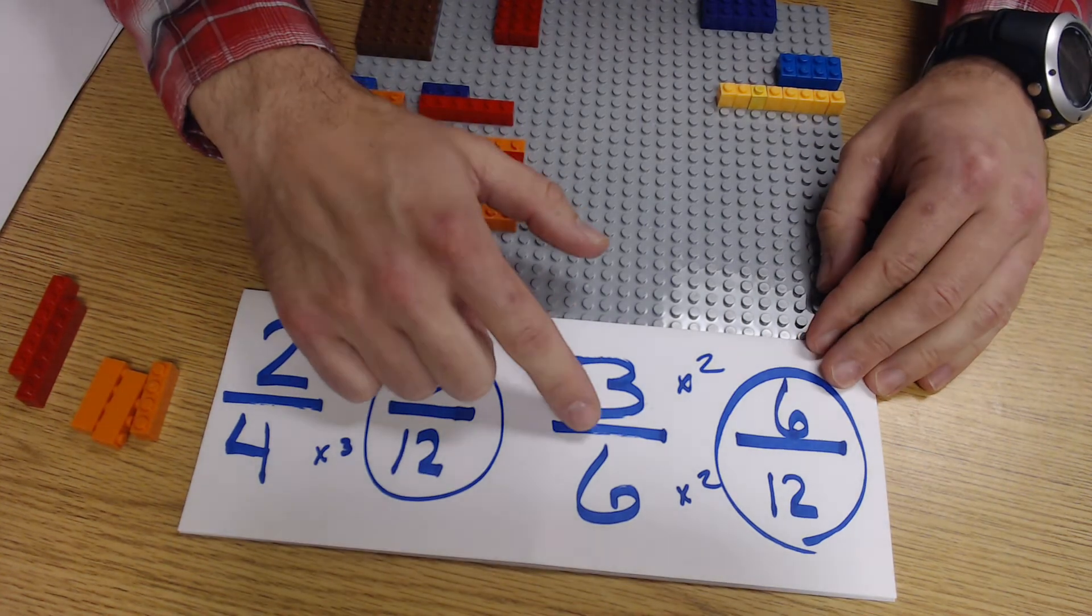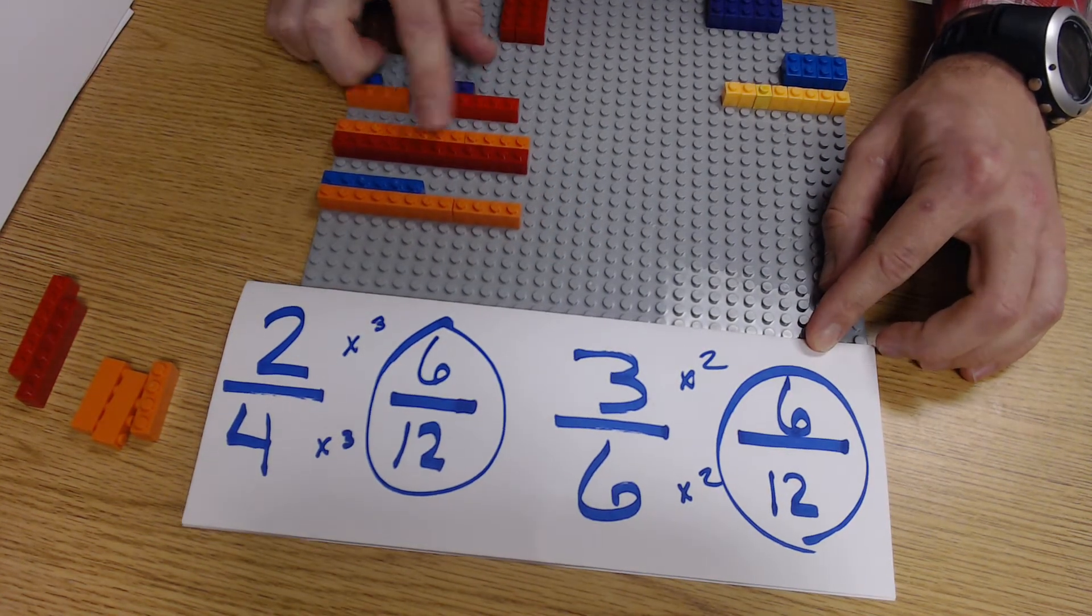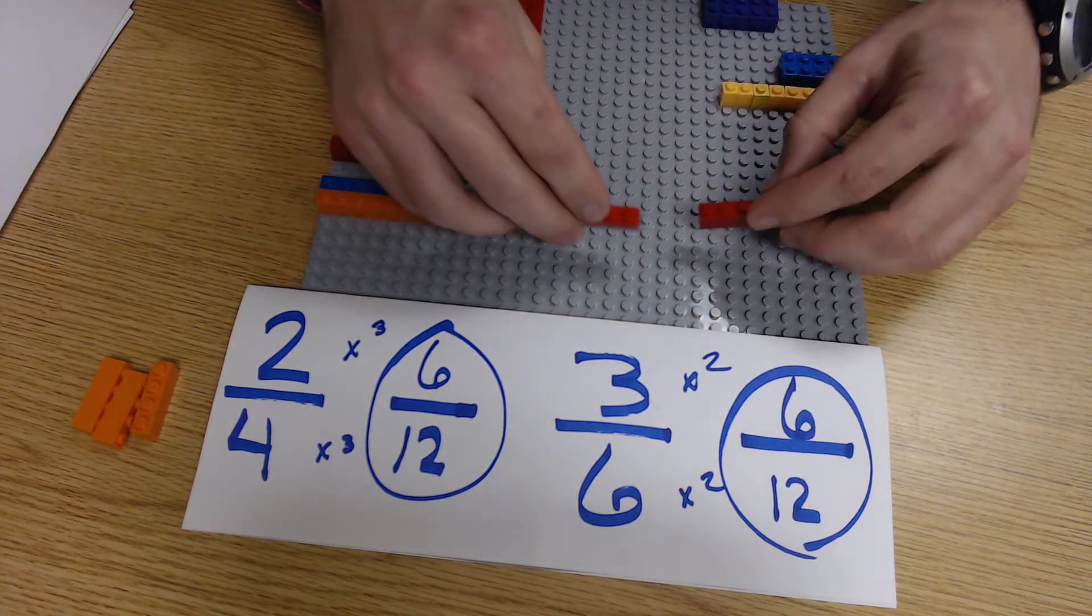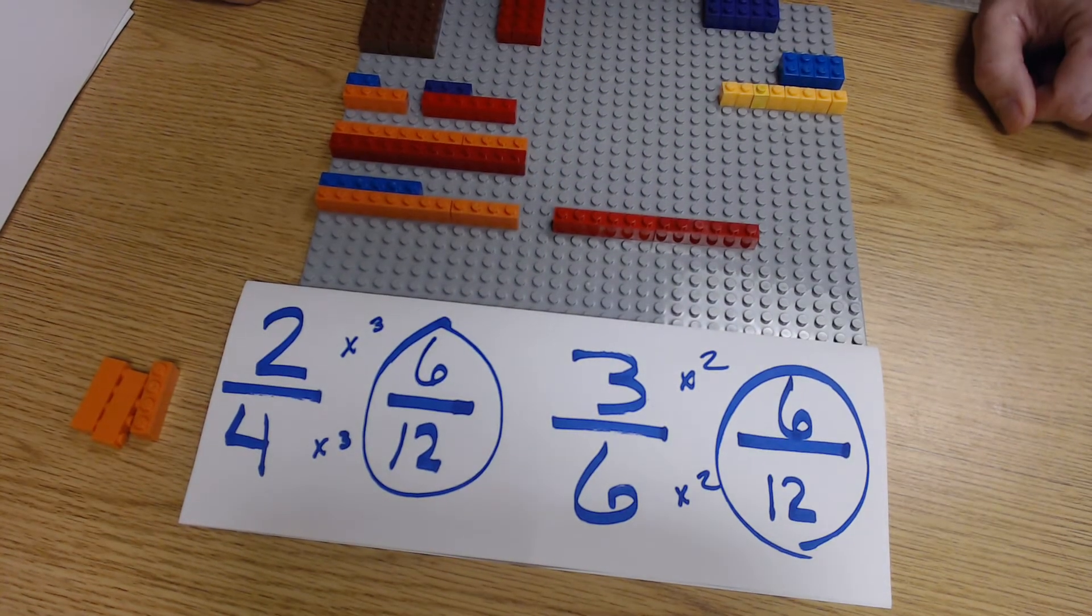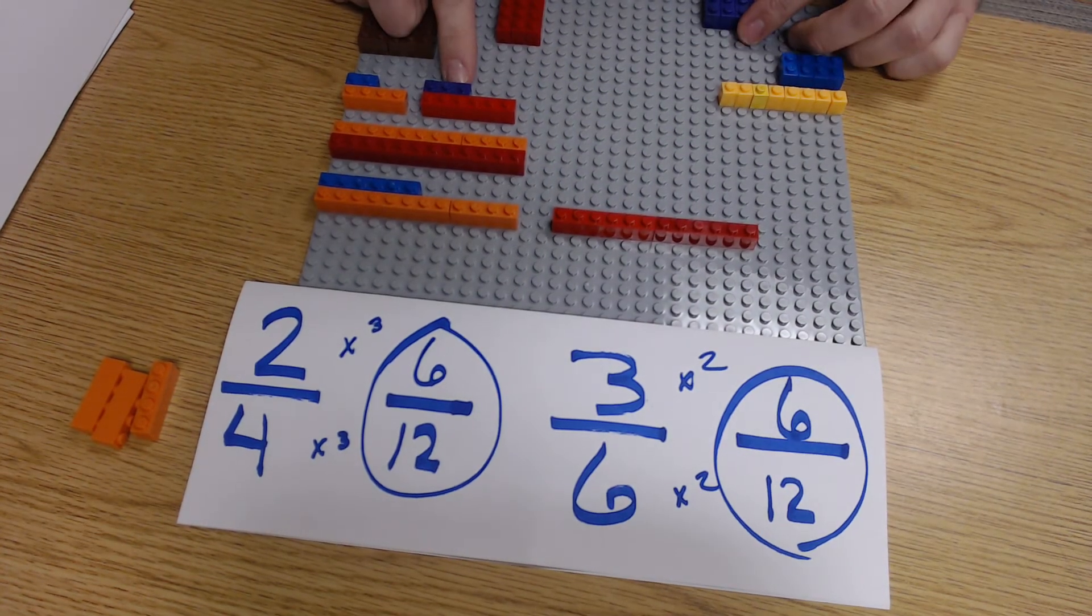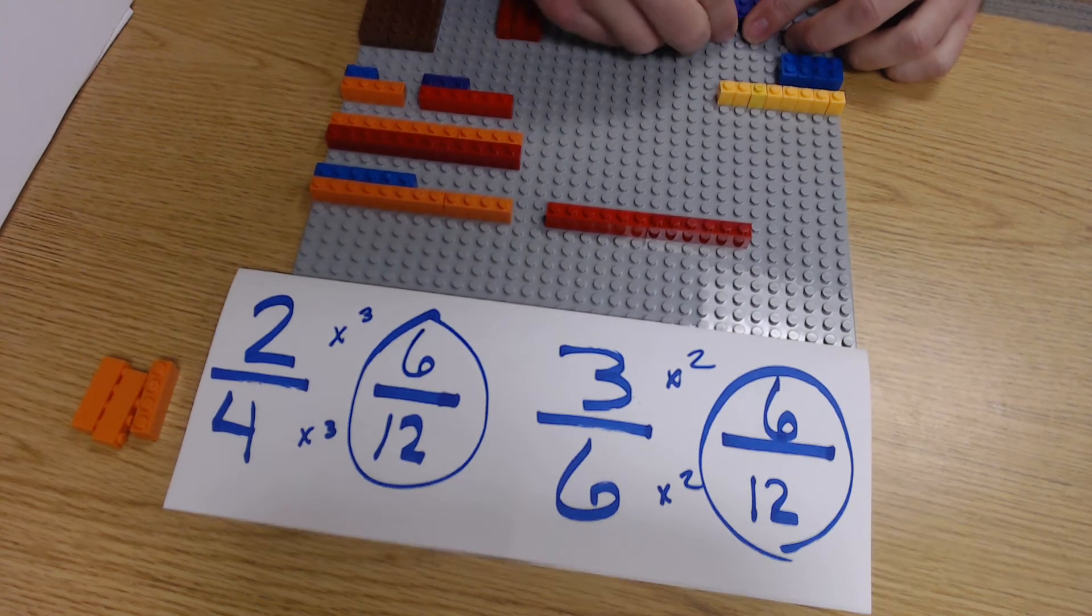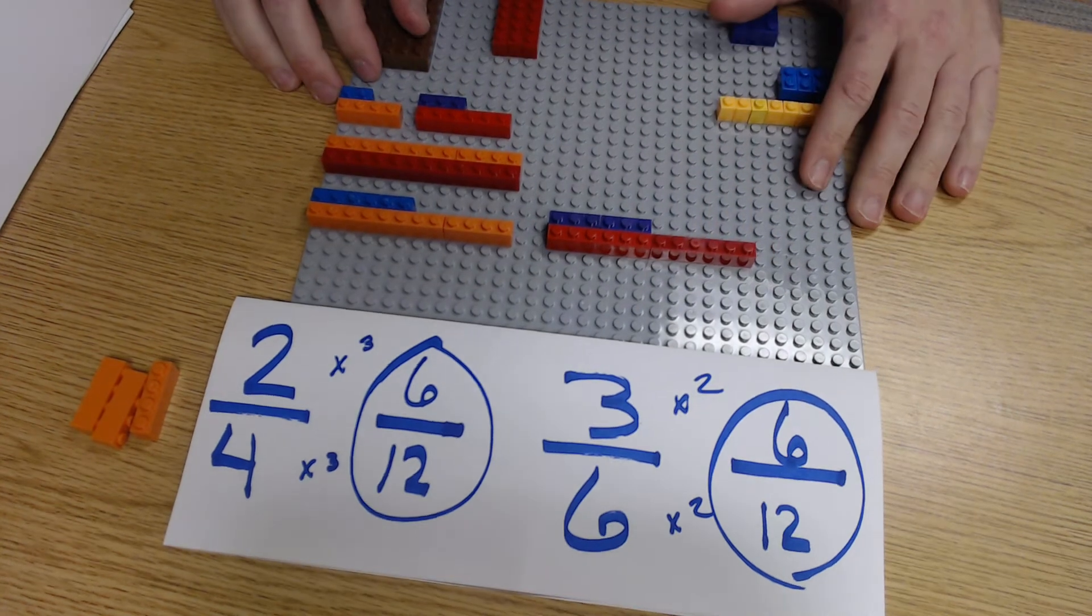Also for three-sixths, how many sixths did it take to build out to our common denominator? One, two. So I'm going to build that out right here. Here's my one, two, six. There it is. There's one, two. So I'm going to need two of my three and build that out. One, two. And what does that give me?